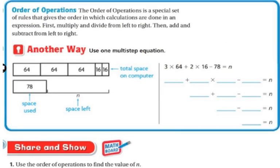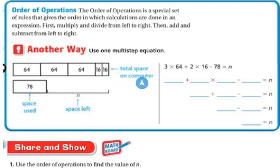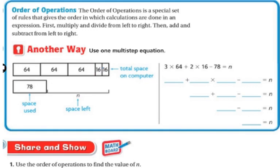Another way we can do this is using order of operations — a special set of rules that gives order in which calculations are done in an expression. First you multiply and divide from left to right, then you add and subtract from left to right. So 3 times 64 plus 2 times 16 minus 78 gives us our final answer. We multiply first, then add, then subtract.